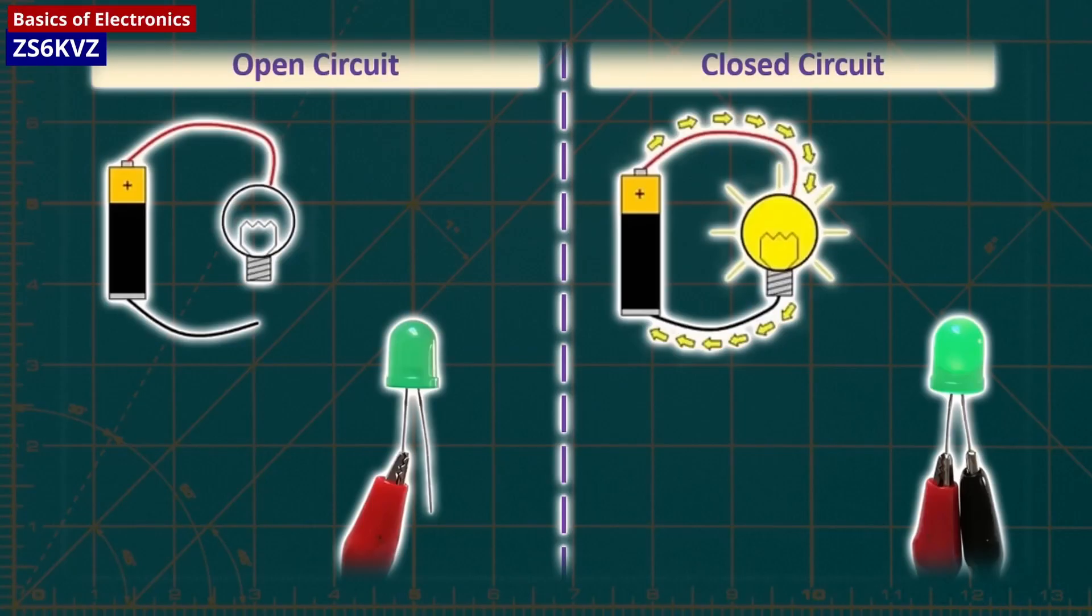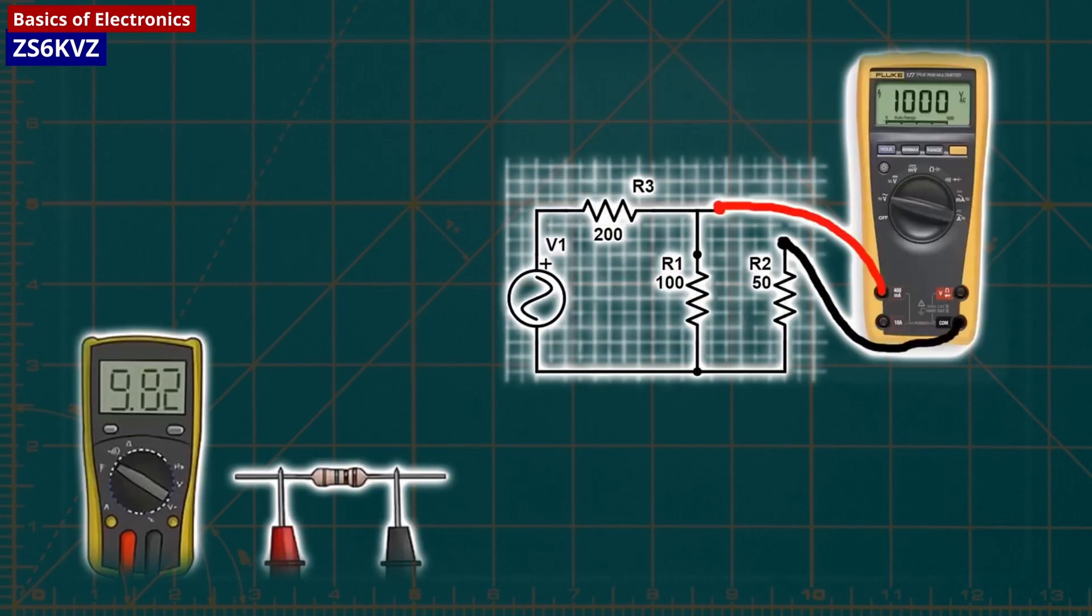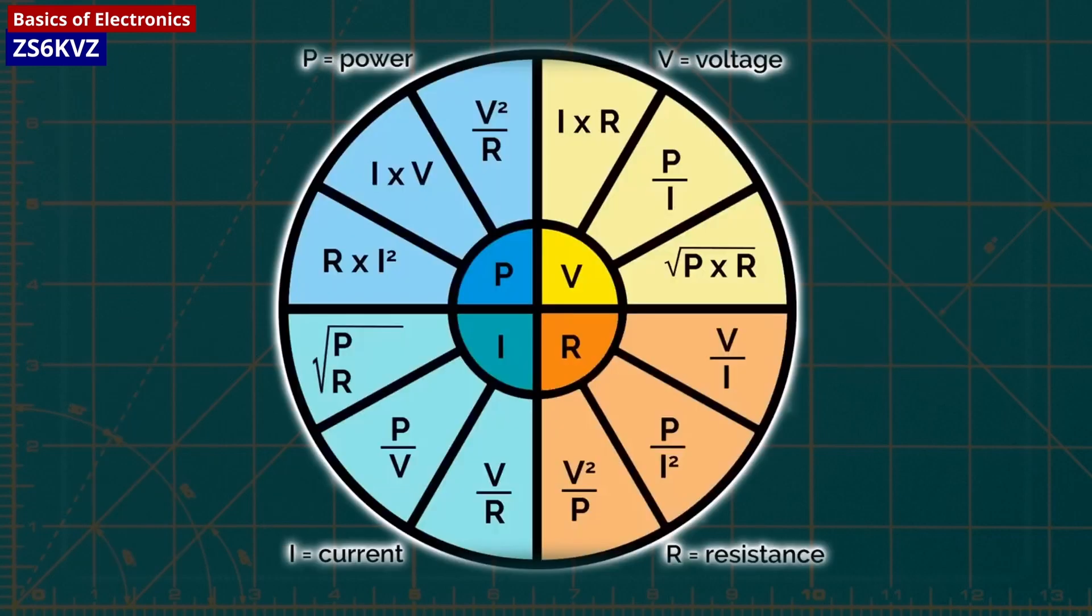A circuit is a complete and closed path through which electric current can flow. In other words, a closed circuit would allow the flow of electricity between power and ground. An open circuit would break the flow of electricity between power and ground. Anything that is part of this closed system and allows electricity to flow between power and ground is considered to be part of the circuit.